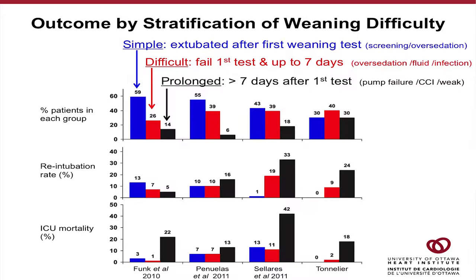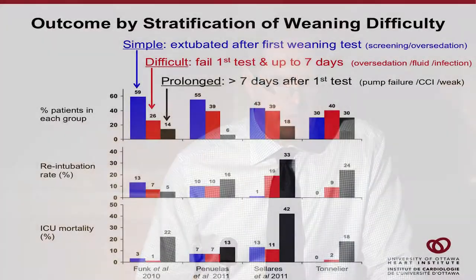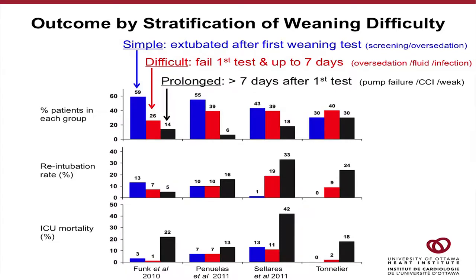Over-sedation is a big one — that's my clinical impression. Then we have the difficult-to-wean, who fail the first time you try a weaning test and may take up to seven days. Over-sedation is again a prominent theme, as are fluid overload and infectious causes. For prolonged weaning — patients who stay more than seven days after their first attempt — the issues generally tend to be pump failure, not only cardiac but respiratory as well, with a huge overlap with chronic critical illness. Weakness is a major part of that, and prolonged ventilation is closely associated with very high mortality.